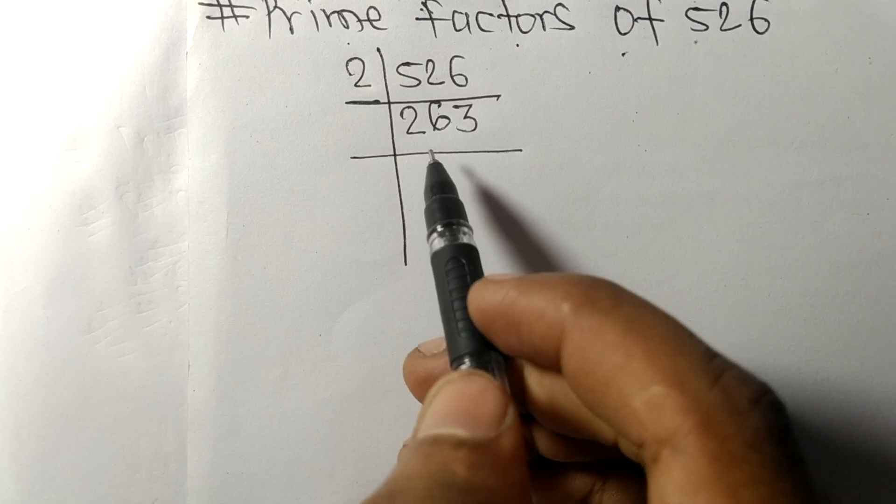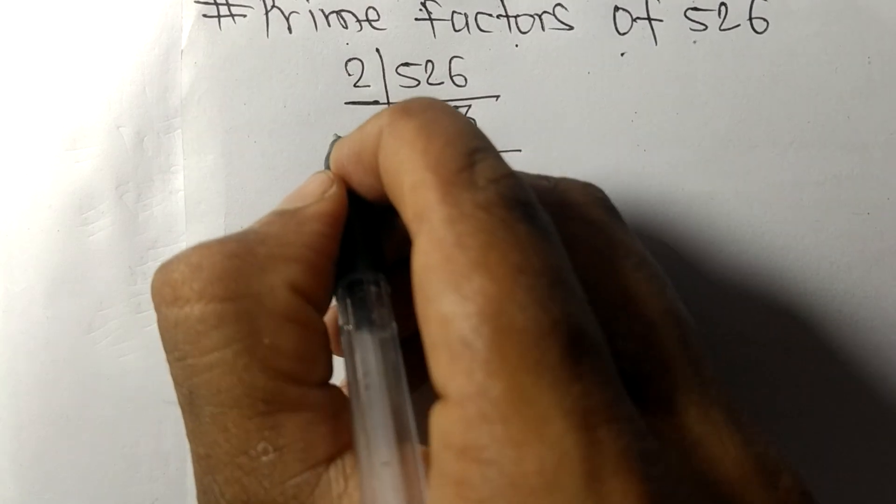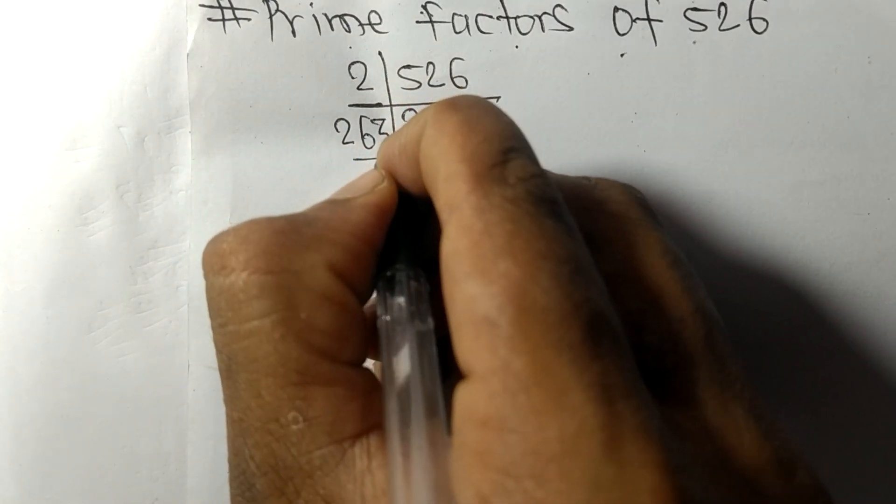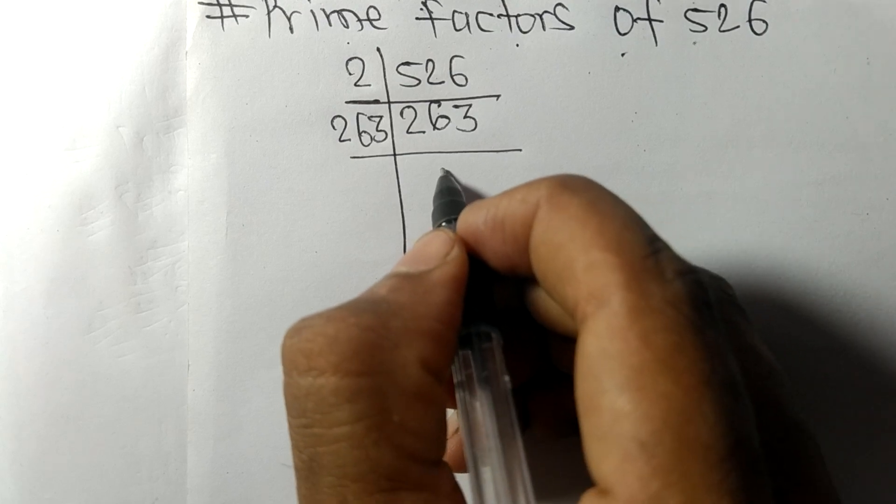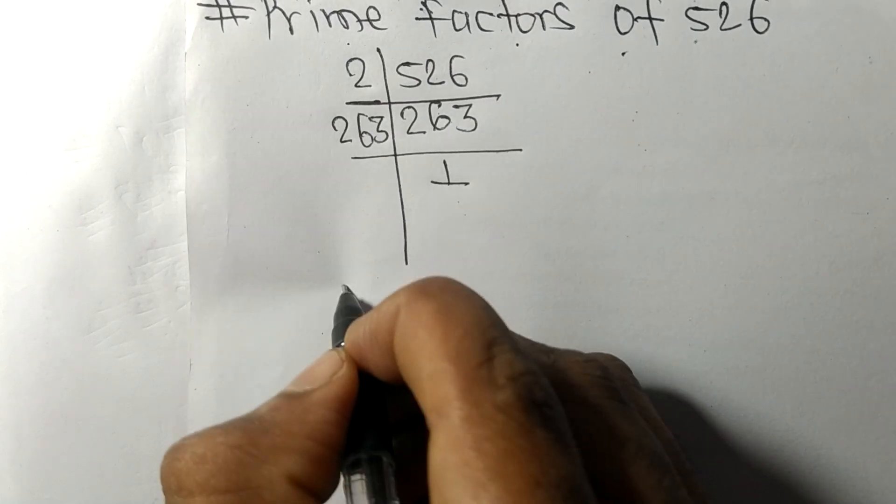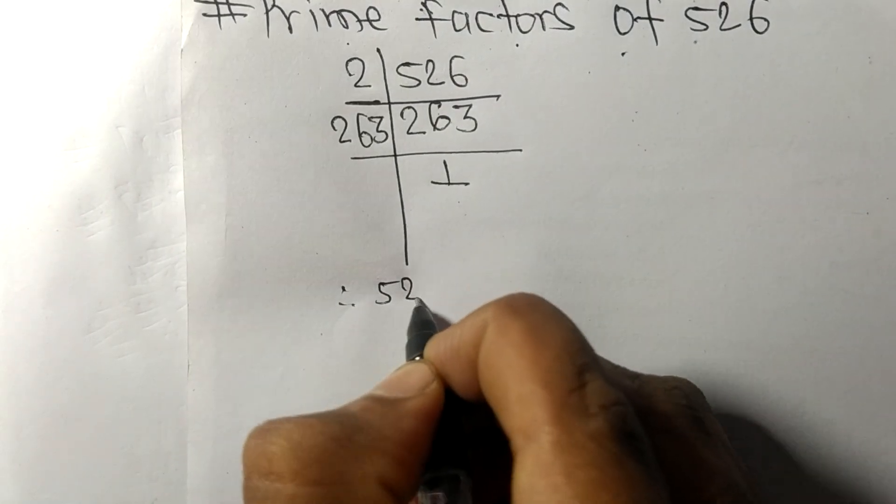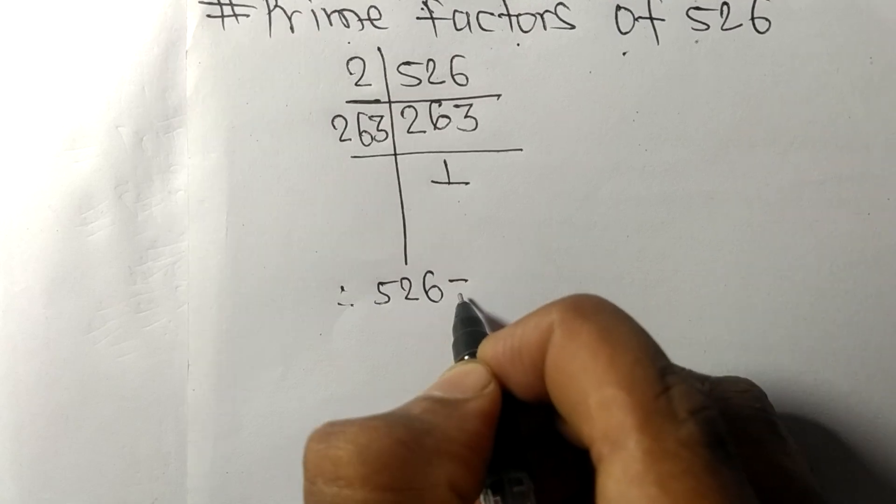263 is a prime number, so it is divisible by 263 itself and we get 1. Therefore, 526 is equal to